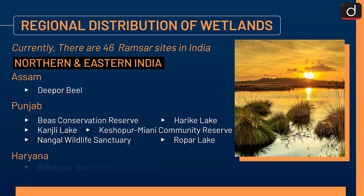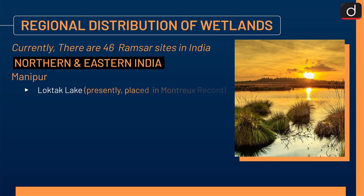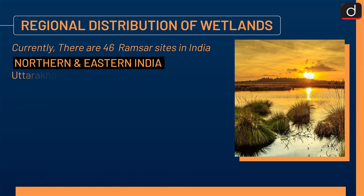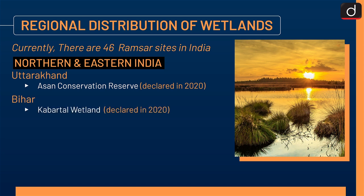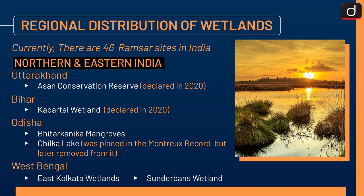In Haryana: Sultanpur National Park (declared 2021) and Bhindawas Wildlife Sanctuary (declared 2021). Loktak Lake in Manipur — presently placed in Montreux Record. Rudrasagar Lake in Tripura. In Uttar Pradesh: Nawabganj Bird Sanctuary, Parvati Agra Bird Sanctuary, Saman Bird Sanctuary, Samaspur Bird Sanctuary, Sandhi Bird Sanctuary, Sarsai Nawar Jheel, Sur Sarovar, and Upper Ganga River (Brijghat to Narora stretch). In Uttarakhand: Asan Conservation Reserve (declared 2020). In Bihar: Kabartal Wetland (declared 2020). In Odisha: Bhitarkanika Mangroves and Chilika Lake (placed in Montreux Record, later removed). In West Bengal: East Kolkata Wetlands and Sundarbans Wetland.